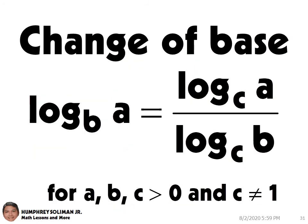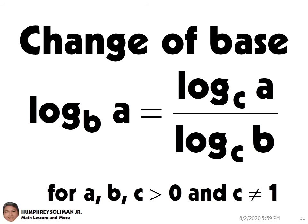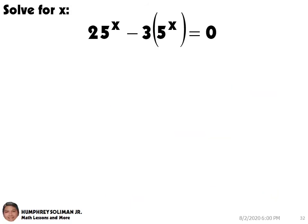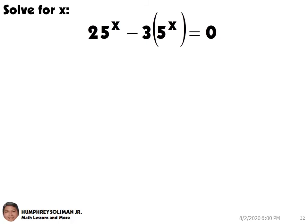Change of base. If we have log base b of a, this can be written as log base c of a over log base c of b. This is for all a, b, and c greater than 0, and c is not equal to 1. This allows us to change the base of a given logarithm, as long as we use the same base for the numerator and the denominator.